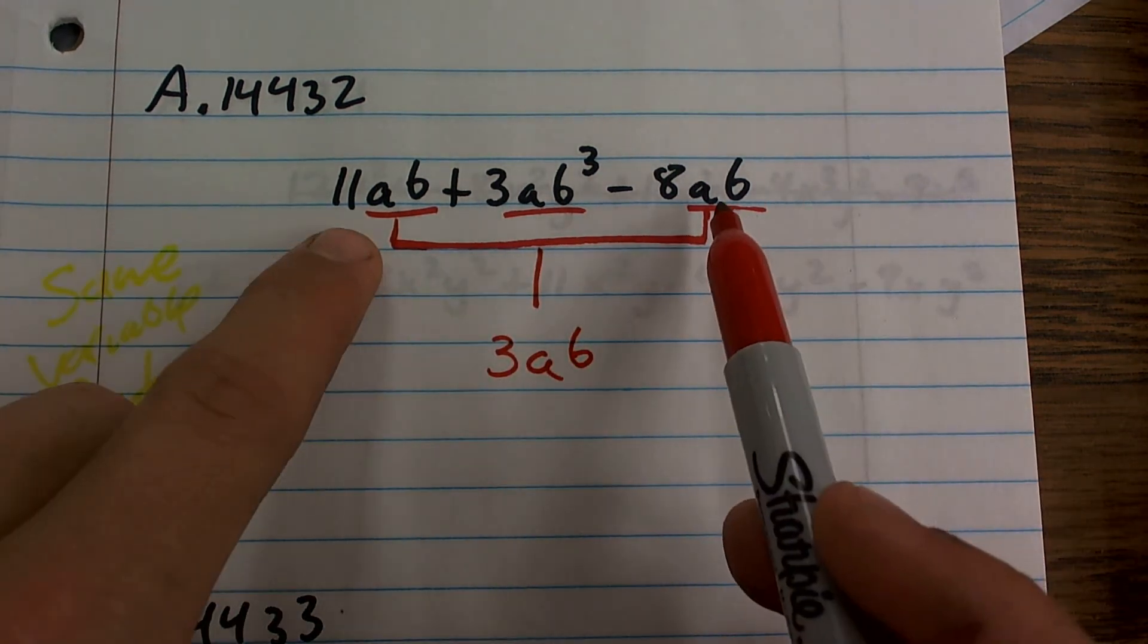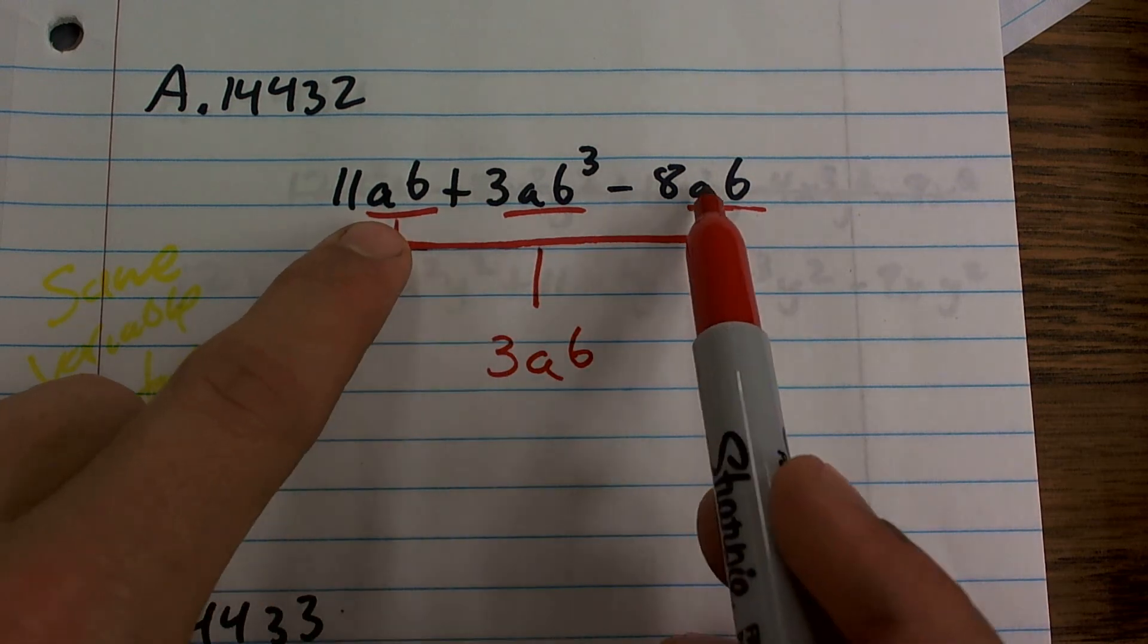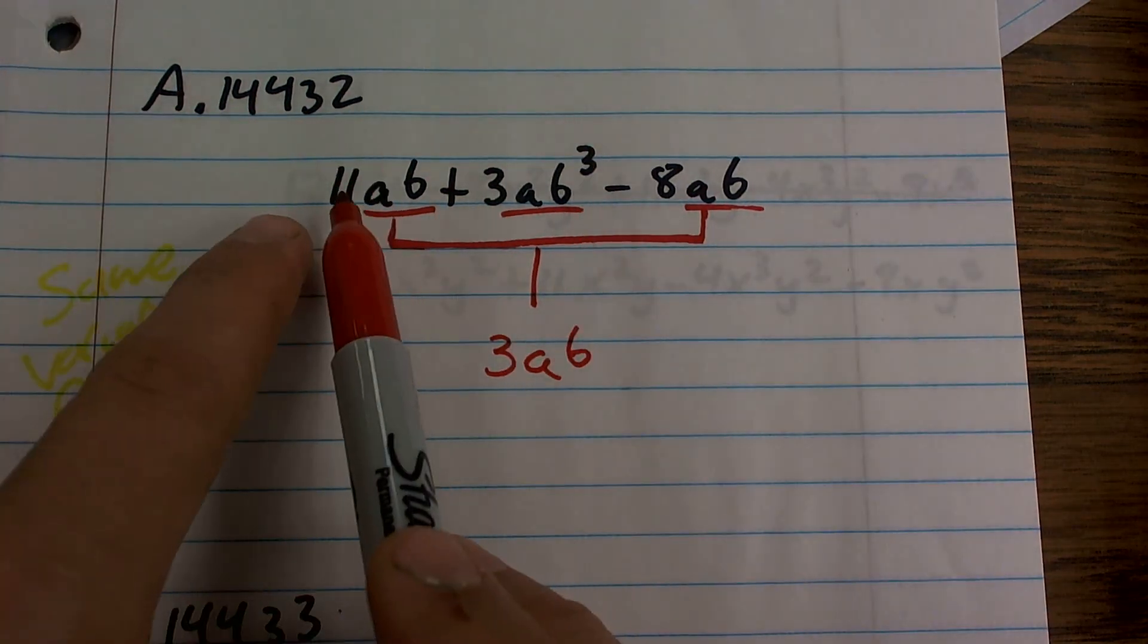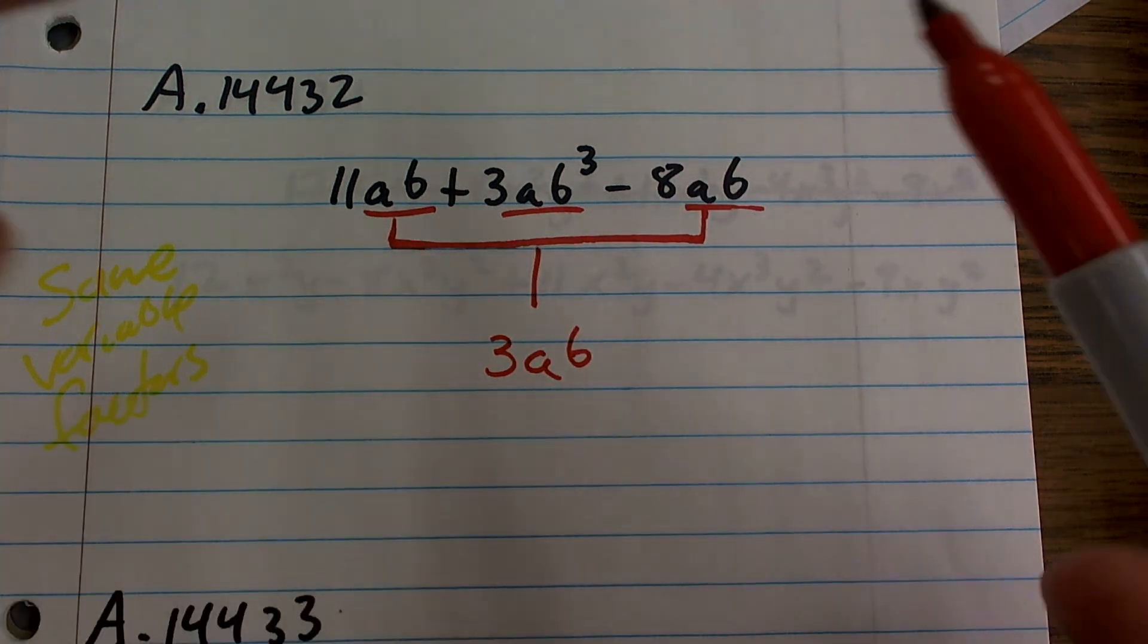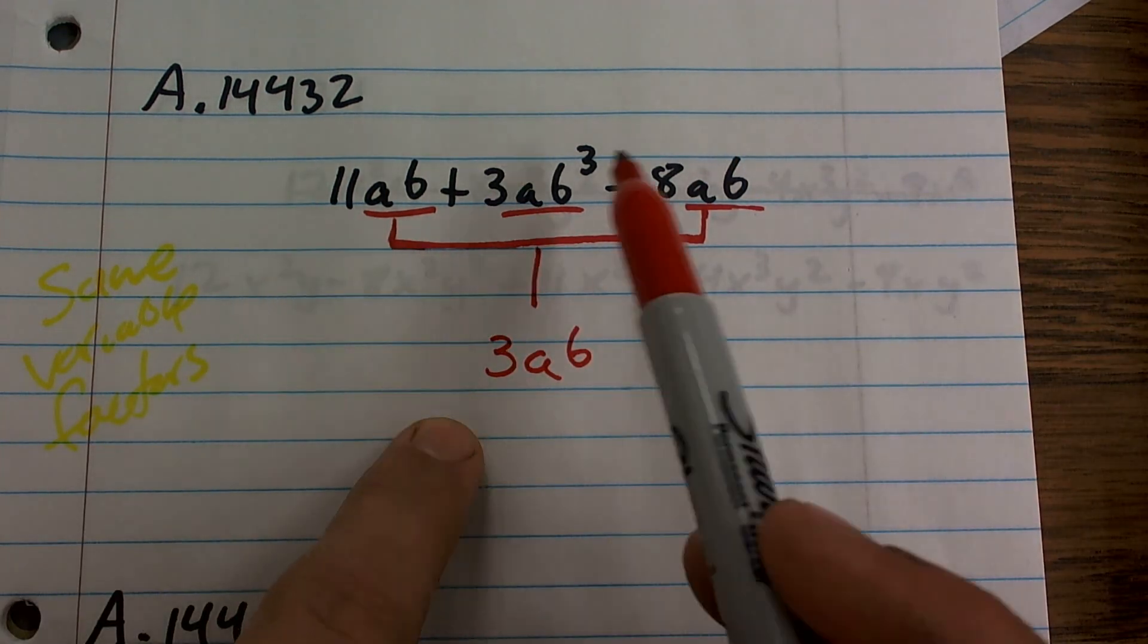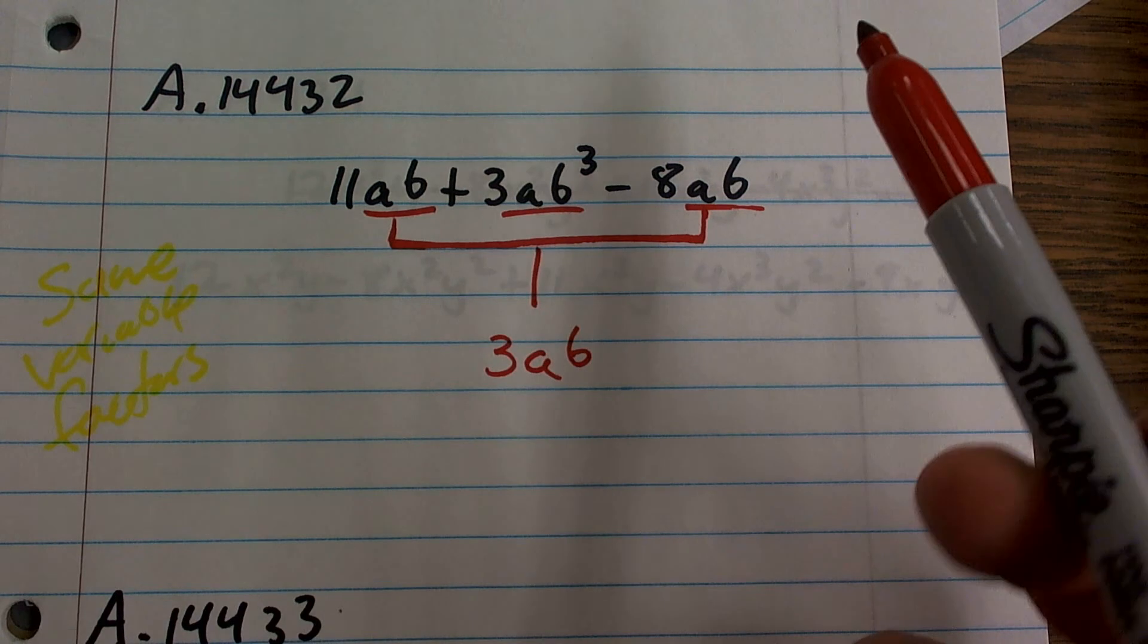And again, you could use distributive property for this. Since they're both multiplied by an AB, you could factor it out and then just subtract the 11 minus 8, which is 3. Or you could say if you have $11, you owe somebody 8, you now have $3.